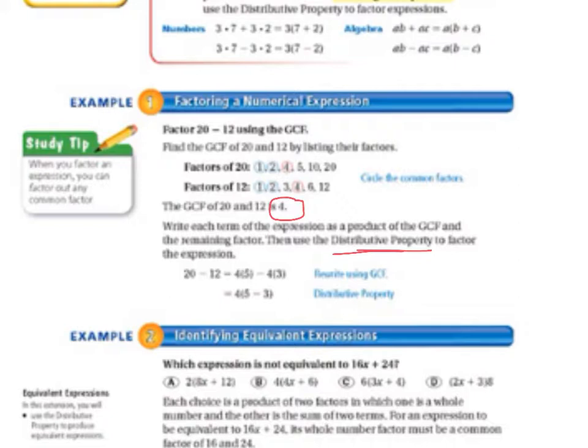20 minus 12 equals 4 times 5, because that equals 20, minus 4 times 3, because that equals 12. So, when we use it, when we make it look like it does with the distributive property, it's 4 on the outside of parentheses times 5 minus 3 on the inside of the parentheses.